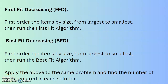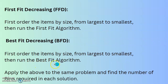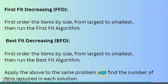The next method is First Fit Decreasing: first order the items by size from largest to smallest, then run the First Fit algorithm as previously discussed. Another method is Best Fit Decreasing: first order the items by size from largest to smallest, then run the Best Fit algorithm as discussed earlier. We can apply these two methods to the same problem and find the number of bins required in each solution.